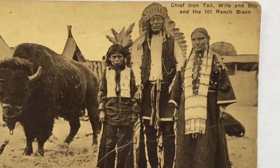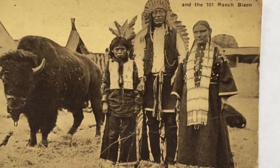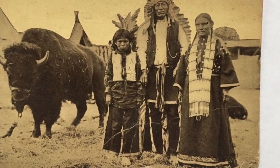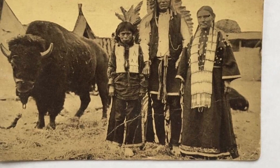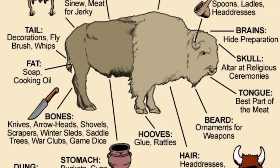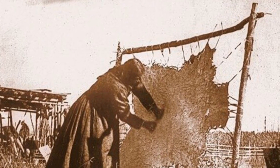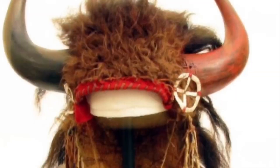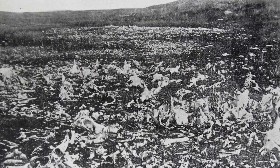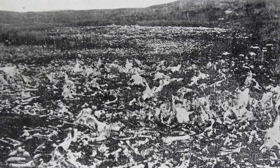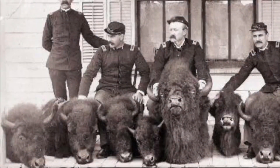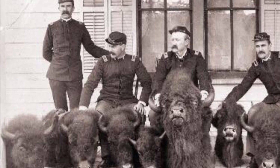The English settlers wanted to take control of the Native Americans, since bison provided a lot for them, such as food, hide, clothing, etc. The English would kill the bison for their tongues and hides, along with other things, while their carcasses would lay in the prairie sun rotting. Their overhunting was a dominant factor in the near extinction of the bison.